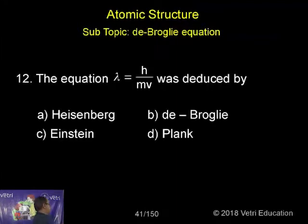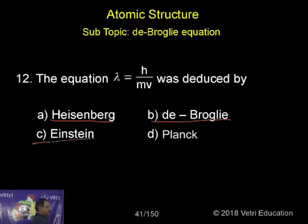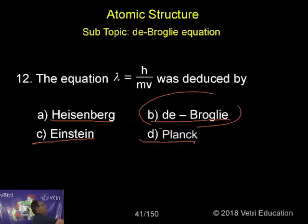Next is number 12. The equation lambda equals h by mv was deduced by—this will be easy now because we've already discussed it. The name, everything: a is Heisenberg, b is de Broglie, c is Einstein, d is Planck. So the correct answer is b, de Broglie.